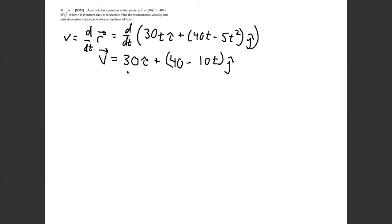This means there's a constant velocity of 30 in the I hat direction, and an initial velocity of 40 in the J hat direction with an acceleration of negative 10 in the J hat direction. So this is like an initial velocity of 40 up with an acceleration of 10 down — after four seconds it's going to change direction.